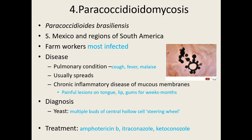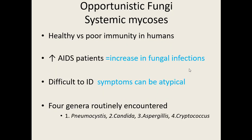Moving on to opportunistic fungi — these generally don't affect healthy individuals but affect those with weaker immune systems. As the number of AIDS patients increases, we see an increase in fungal infections. These are difficult to identify because their symptoms are atypical and resemble other conditions. There are four genera we routinely encounter in humans.